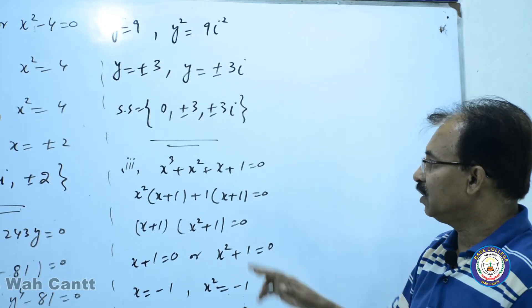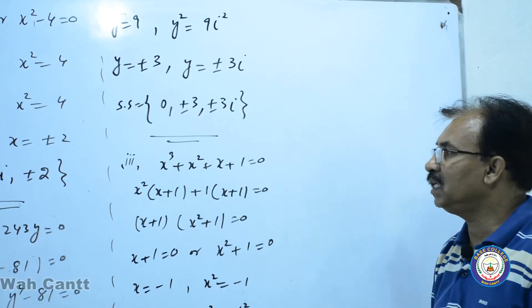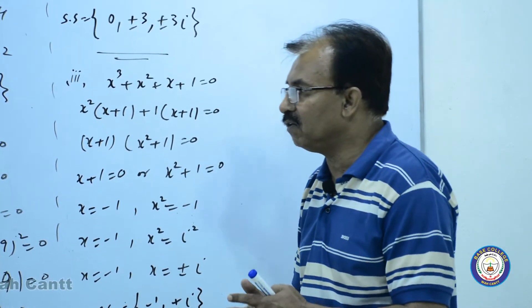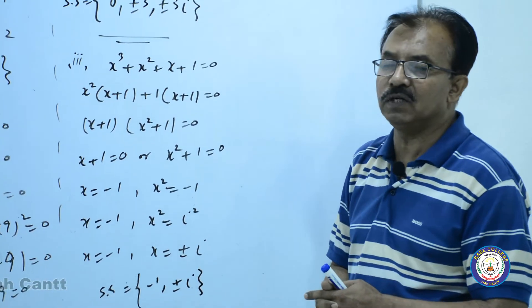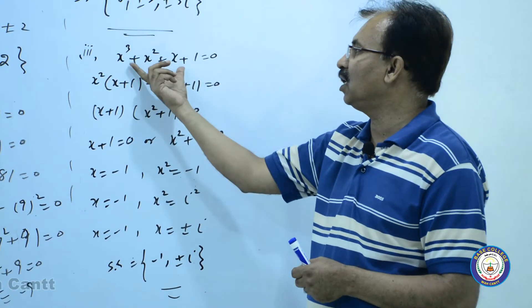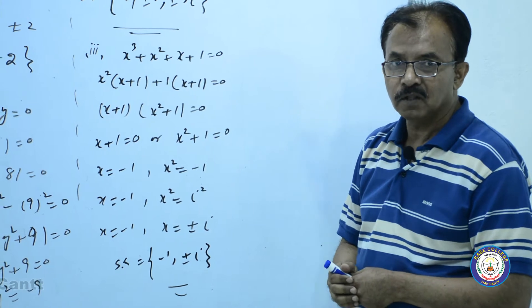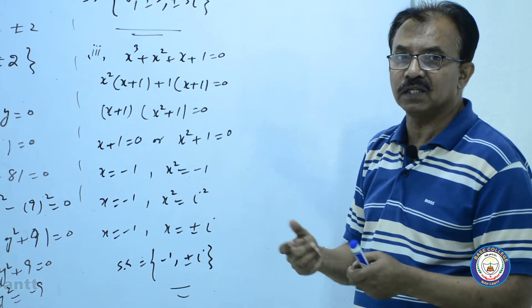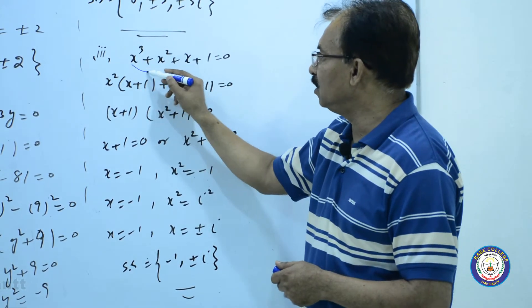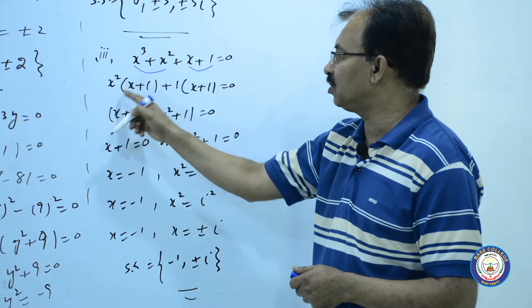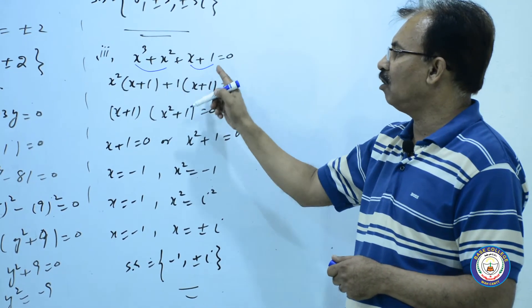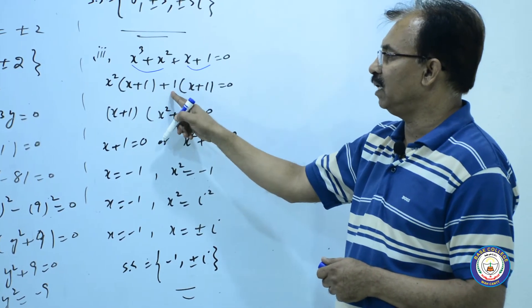اس کے بعد third part ہے۔ factorize کا ایک اور method یہ ہوتا ہے کہ اگر جو part given ہے ان میں common کوئی نہ نکلے تو ہم pairing کرتے ہیں۔ یہ چار parts ہیں، چاروں میں کوئی common نہیں ہے تو pair کر دیا۔ یہاں سے x square common آیا ہے اور یہاں سے کچھ common نہیں ہے تو plus one لے لیا۔